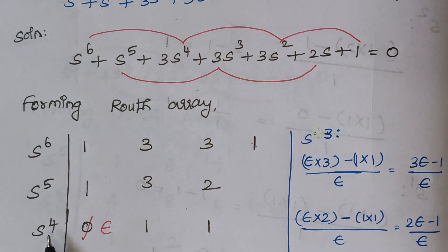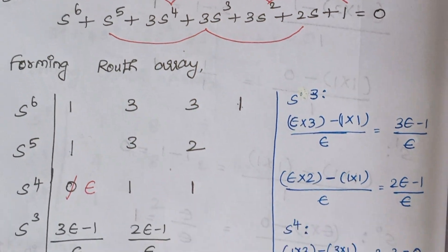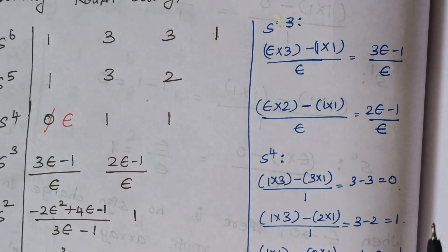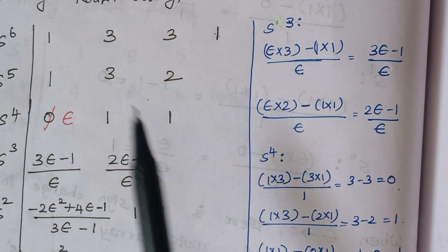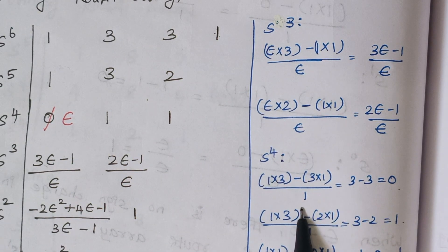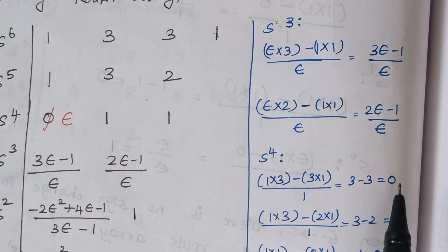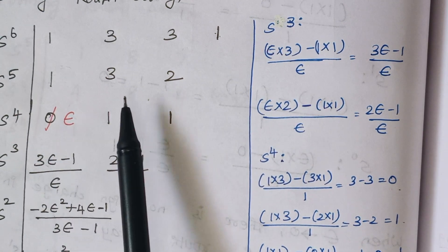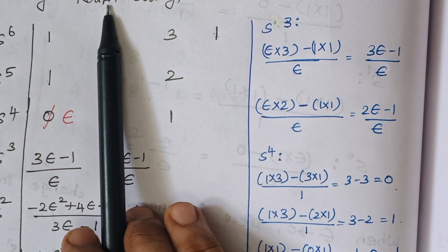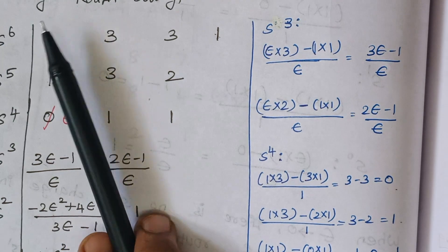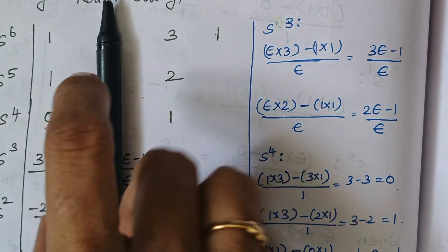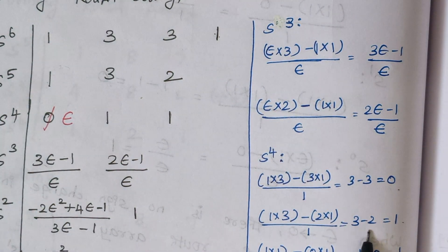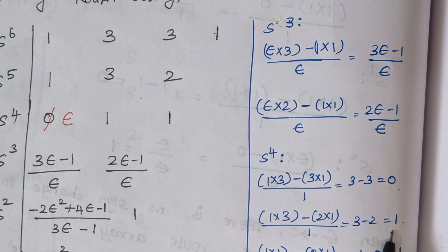The next step is finding the s^4 row. The procedure gives us: (1×3 − 3×1) / 1, which is 3 − 3 = 0, so the first term is 0. Hiding the first column and multiplying: (1×3 − 2×1) / 1 = 3 − 2 = 1, so the second term is 1.